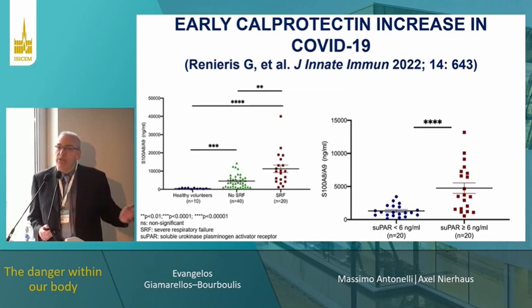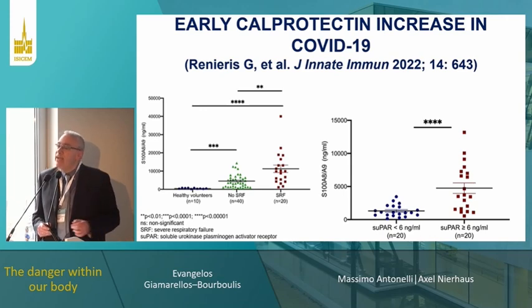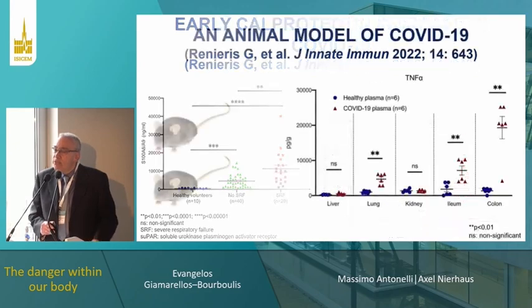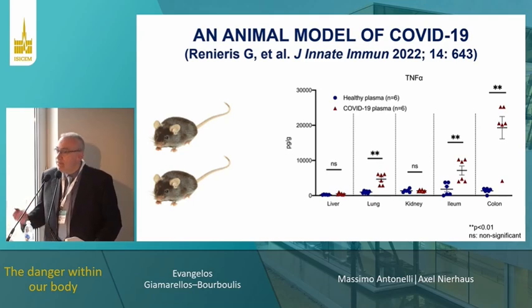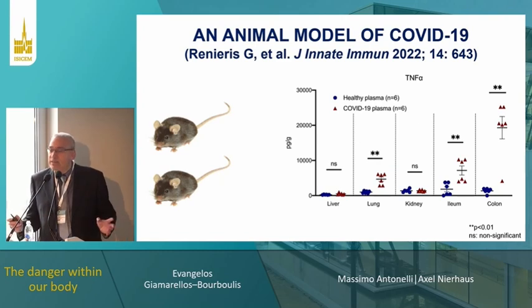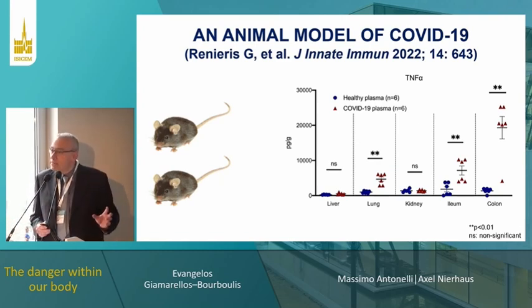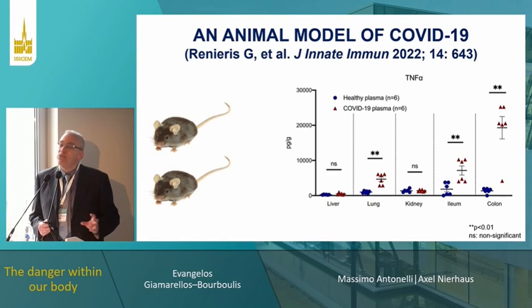We used SUPAR as a biomarker to identify patients with more calprotectin versus those with low calprotectin. Patients who on admission had SUPAR of 6 or more had much more circulating calprotectin. If calprotectin or DAMPs are doing the dirty work inducing severe respiratory failure, then we should take plasma from humans, stimulate mice with it, and see if we could get an inflammatory pattern similar to COVID-19.